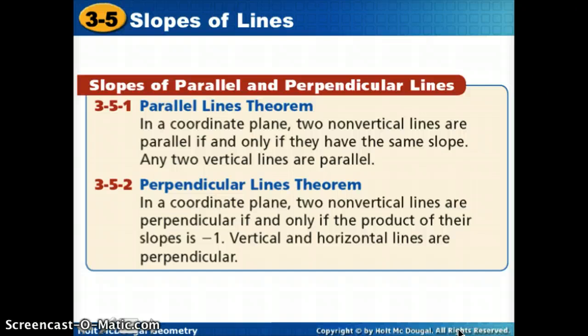Okay, now we're going to learn about relationships in our lines. Parallel lines theorem says in a coordinate plane, two non-vertical lines are parallel if and only if they have the same slopes. Any two vertical lines are also parallel. So same slopes gives us parallel lines. In a coordinate plane, two non-vertical lines are perpendicular if and only if the product of their slopes is negative 1. And vertical and horizontal lines are perpendicular. So we'll talk about what this negative 1 thing means.